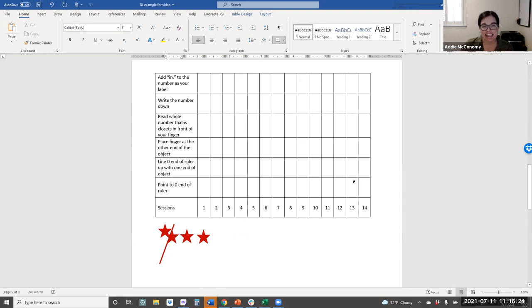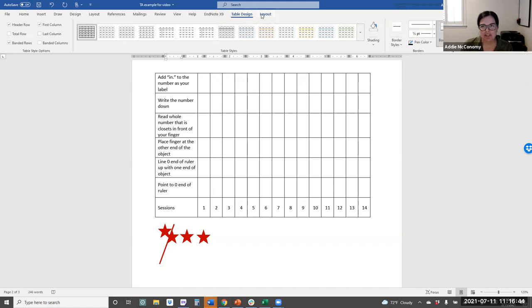So now that we have our task analysis in an upside down format, meaning the first step is at the bottom and the last step is at the top, we can go ahead and use this. If I was working with a student in an instructional session, I would have them shade in or color using a marker or a highlighter when they completed a step independently correct. For the interest of this demonstration, I'm actually going to use the shading feature in Microsoft Word.